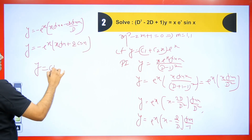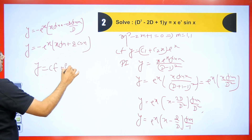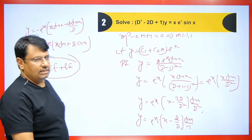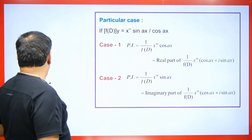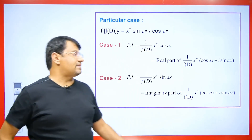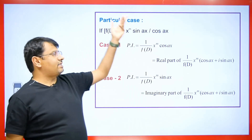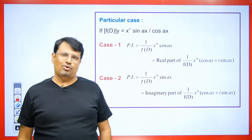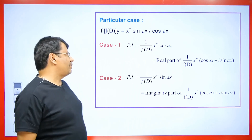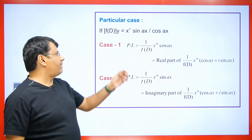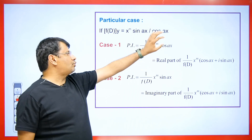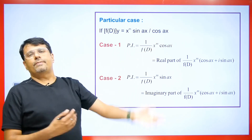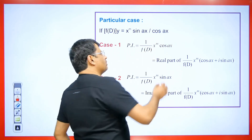The final answer we get is CF + PI. In this way, very easily you can solve these types of questions. Now, suppose instead of x we get x² or x³; to solve such questions, we use a concept: when we get cos or sin in a question, we write it in the form of e^(iax).